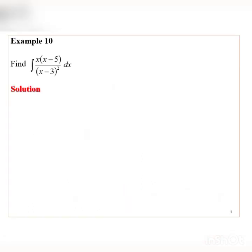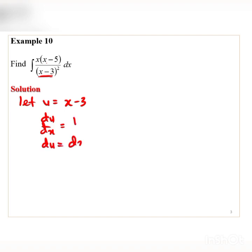Next, let me see Example 10. Find the integration of x(x minus 5) over (x minus 3) squared, dx. Same case — to use the substitution method, we choose the expression in the bracket of the denominator. So let u equal to x minus 3. Differentiating, we get du/dx equal to 1, so du equals dx. The expression still has x in it.